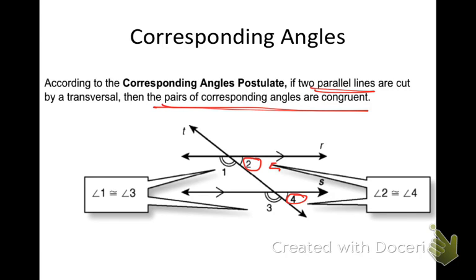For instance, if angle two was 50 degrees, what would that make angle four? 50 degrees. That is always, always true if the lines are parallel — if the lines are parallel, the corresponding angles are congruent.